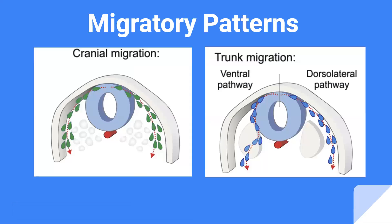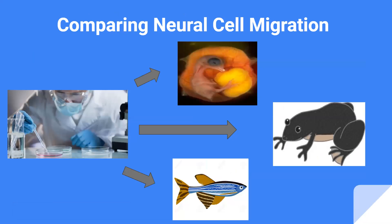It is these migratory pathways that will be the focus of my research. My objective is to compare neural crest cell migration patterns in different model organisms to try and find similarities and differences among them. Based on the literature and current research, I hypothesize that the migration patterns that will be observed are conserved among the species.